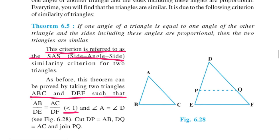This is due to the following criteria of similarity of triangles: If one angle of a triangle is equal to one angle of the other triangle and the sides including these angles are proportional, then the two triangles are similar. This criteria is referred to as SAS — Side-Angle-Side similarity criteria for two triangles.